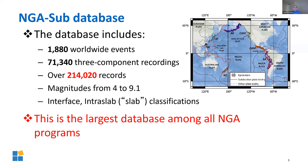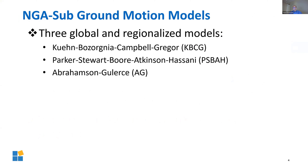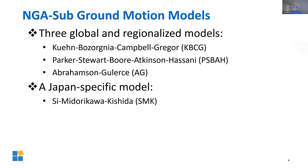The database is the largest database among all our NGA programs. It has over 210,000 records — by a factor of three or four larger than the other NGA programs. We covered different regions of the world, all subduction. Once the database was relatively in good shape, the ground motion modelers got involved, and we have four ground motion models. Three of them are global and regionalized, and one is Japan-specific because they used only Japanese data.